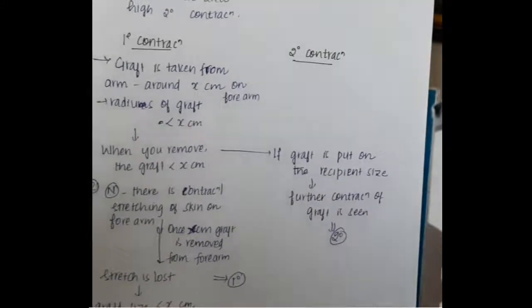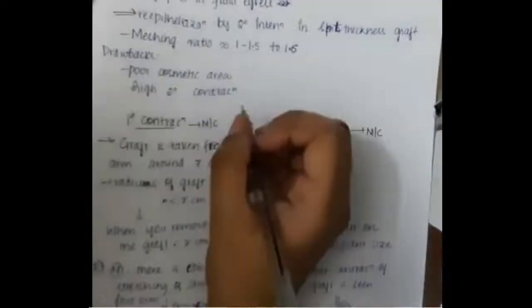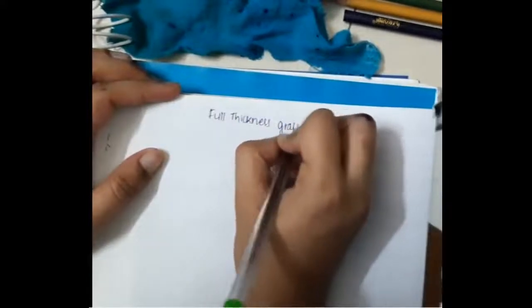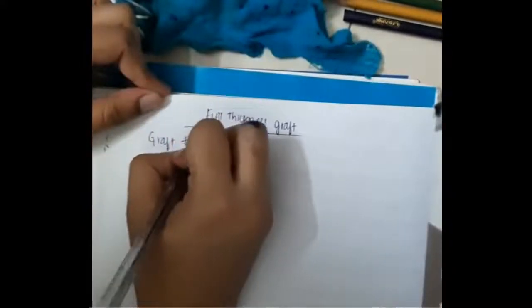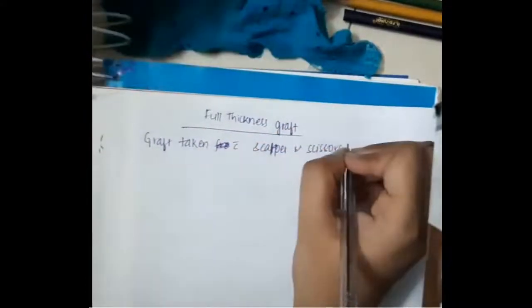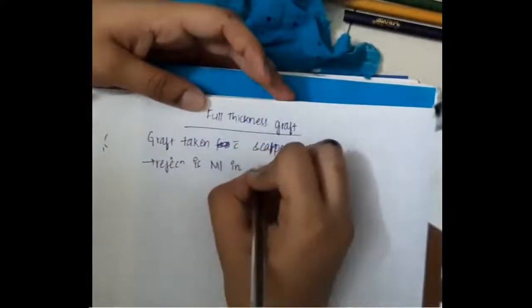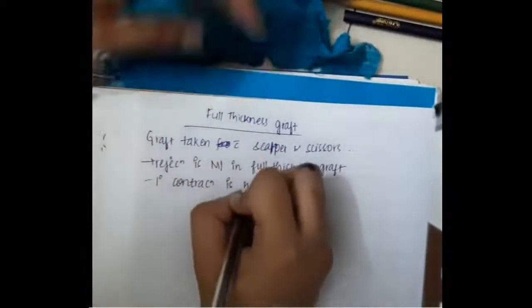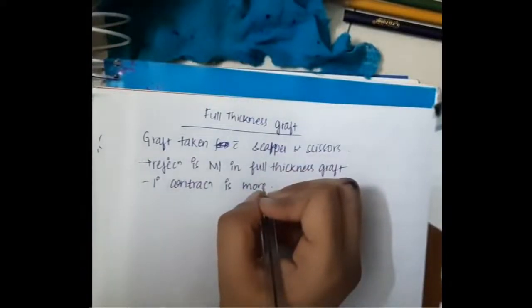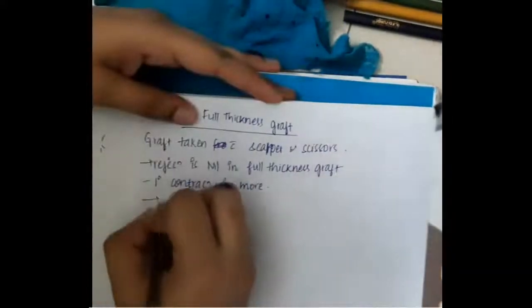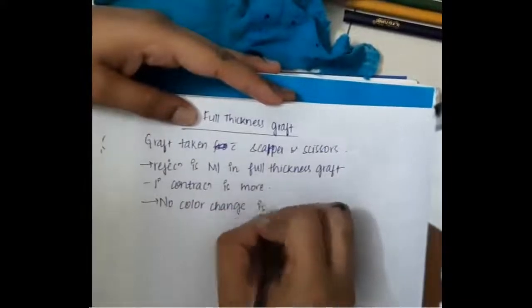Now let us learn some important points about full thickness graft. The graft is taken with the help of a scalpel or scissors. Full thickness graft contains both epidermis and dermis, and rejection is most common in full thickness graft. Primary contracture is maximum in full thickness graft, and no color change of the skin is seen.